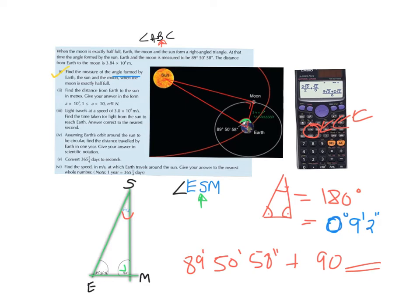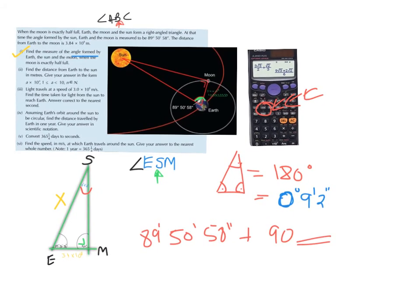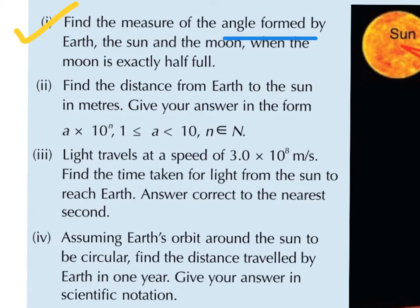The next part says: find the distance from the earth to the sun in meters. I'm going to call this x. Let me also fill in 3.4 multiplied by 10 to the power of 8 for the earth-moon distance. The question asks us to give the answer in scientific notation, which is written as a × 10^n, where n is a natural number and a is between 1 and 10.